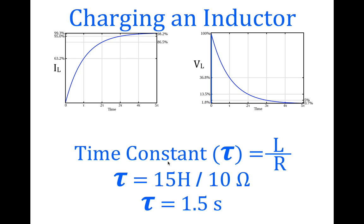If we have a different combination of inductor and resistor — for example, a 5 Ohm resistor — then the time constant in that case would be three seconds. That means after one time constant, or three seconds, the current will be at 63.2% instead of after 1.5 seconds. The time constant is different for each pair of inductor and resistor.